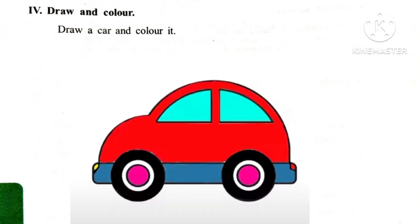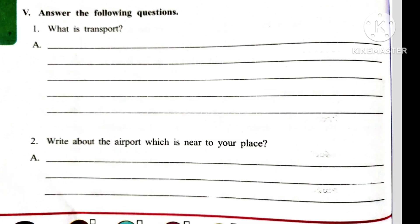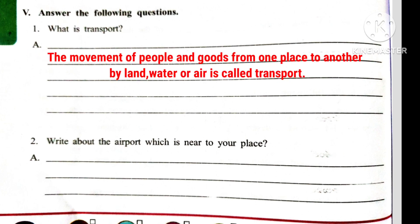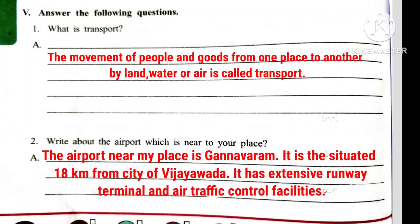Roman number 4 — Draw and color: Draw a car and color it. Dear students, here we have to draw the picture of a car and color it. Roman number 5 — Answer the following questions. Question 1: What is transport? Answer: The movement of people and goods from one place to another by land, water or air is called transport. Question 2: Write about the airport near your place. Answer: The airport near my place is Ganavaram. It is situated 18 km from the city of Vijayawada. It has an extensive runway, terminal, and air traffic control facilities.